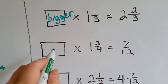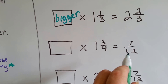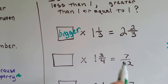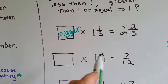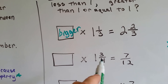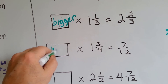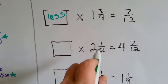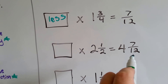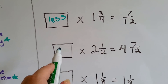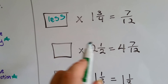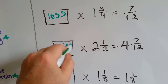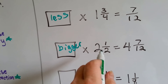How about here? Something times 1 and 3 fourths is going to be 7 twelfths. Is it going to be less than 1, greater than 1, or equal to 1? We look at this number and we can tell — it's smaller than 1 and 3 fourths, so the unknown factor is going to be less than 1. Some factor times 2 and 1 half is going to be 4 and 7 twelfths. That's going to be greater than 1, bigger than 1, because our answer is bigger than 2 and 1 half.